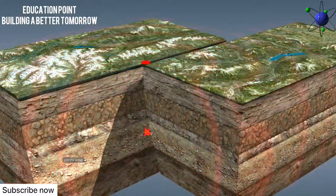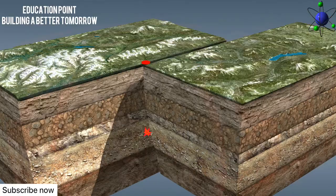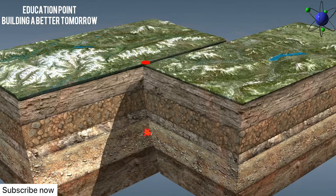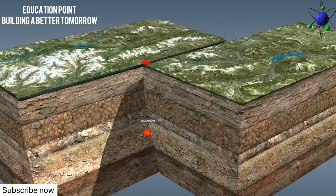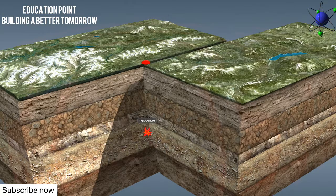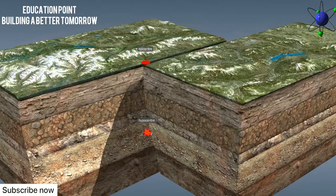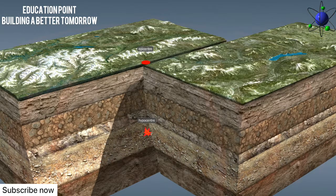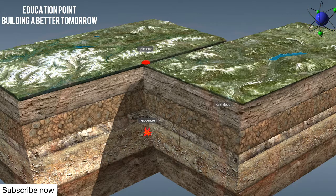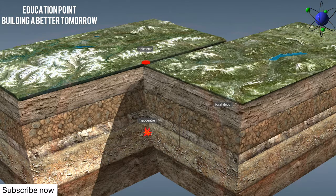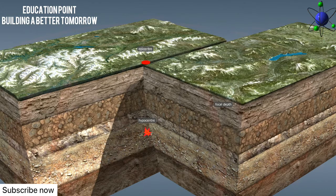The point of origin of an earthquake, where permanent deformation occurs, is called the focus or hypocenter. The point on the Earth's surface nearest to the focus is the epicenter. Here the earthquake has the greatest strength and destructive power. The distance between the hypocenter and the epicenter is the focal depth of the earthquake.